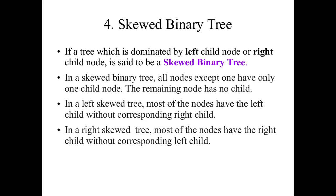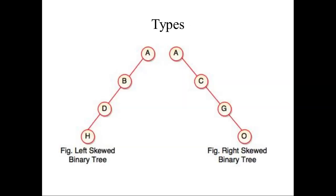In a left skewed binary tree, most of the nodes have only the left child. The right side will be dominant in a right skewed binary tree, and the left side will be dominant in a left skewed binary tree. So skewed binary trees are of two types: left skewed binary tree and right skewed binary tree.